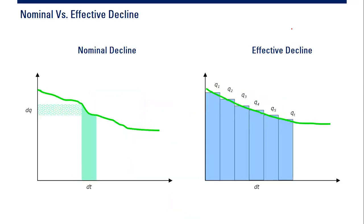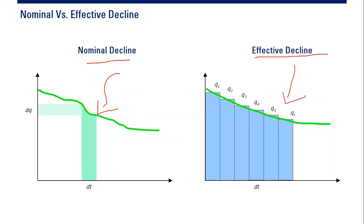If you are dealing with decline curve analysis, for example to forecast production, you basically have two options to express the decline rate. The first one is using nominal decline, as you can see in the left picture, and the second one is expressing it using effective decline, as shown in the right picture. You can see the two declines are quite different.